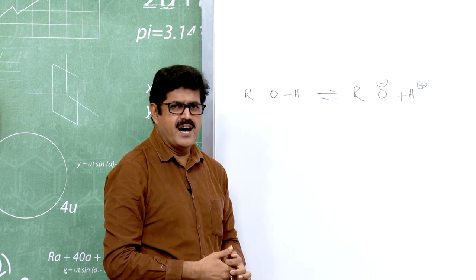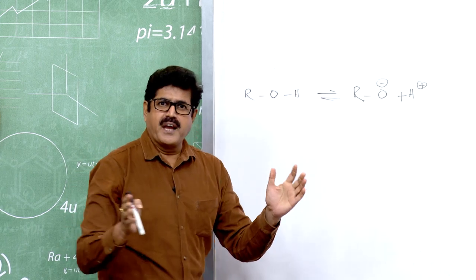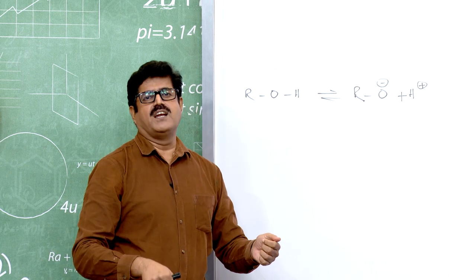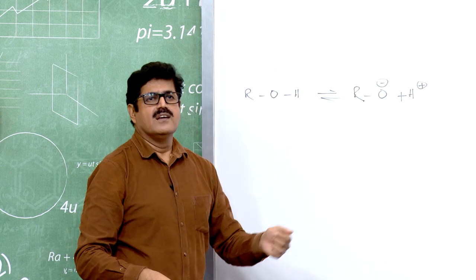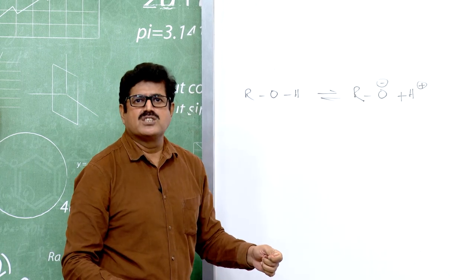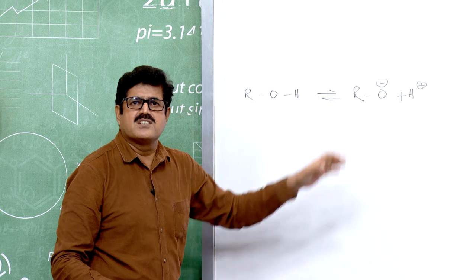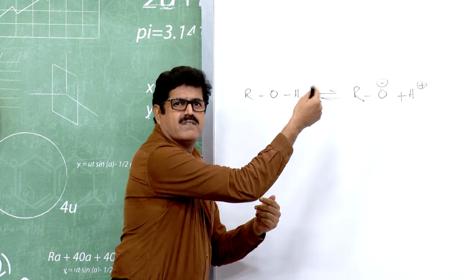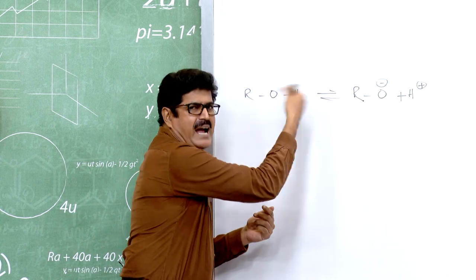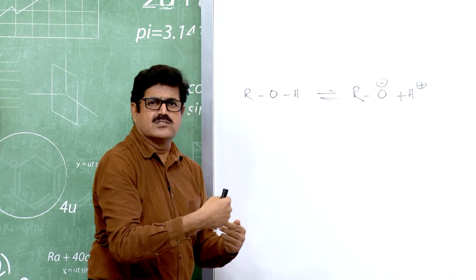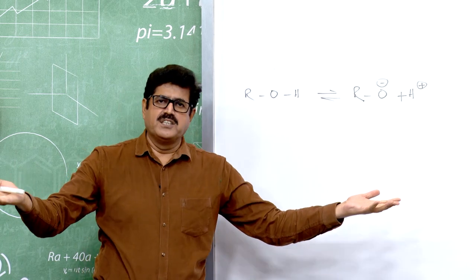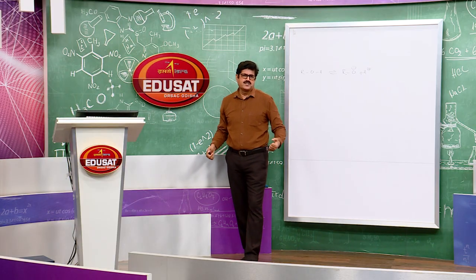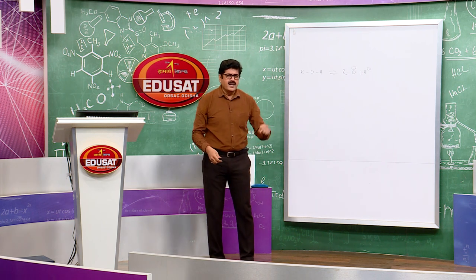So here, the negative charge density increases, making the alkoxide unstable. The equilibrium shifts in the backward direction. Therefore, alcohol does not furnish H⁺ ions and does not show acidic character.